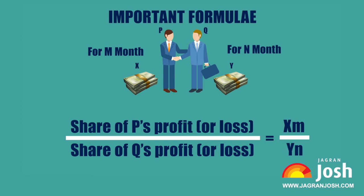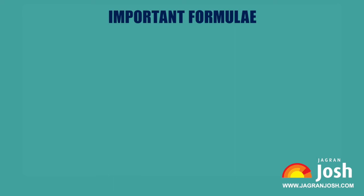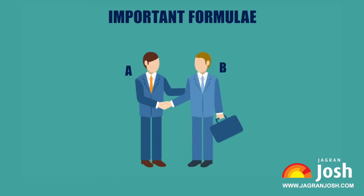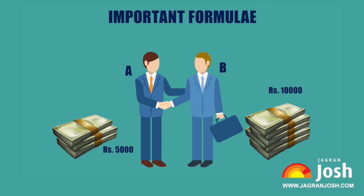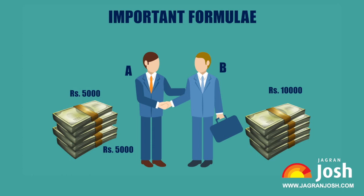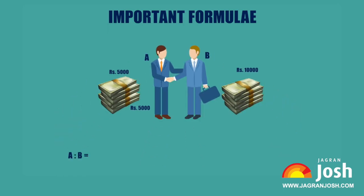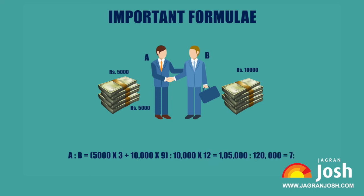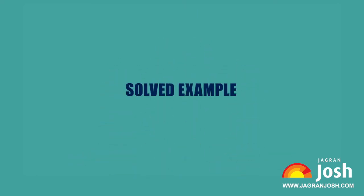When investments are altered in a given period, we need to take the changes into consideration while calculating profits. For example, suppose A and B started their business with rupees 5,000 and rupees 10,000 respectively. If after three months A invested another rupees 5,000, then A's capital for the remaining period is rupees 10,000. So A's to B's ratio is equal to (5,000×3 + 10,000×9) to (10,000×12), which equals 1,05,000 to 1,20,000, which equals 7 to 8.